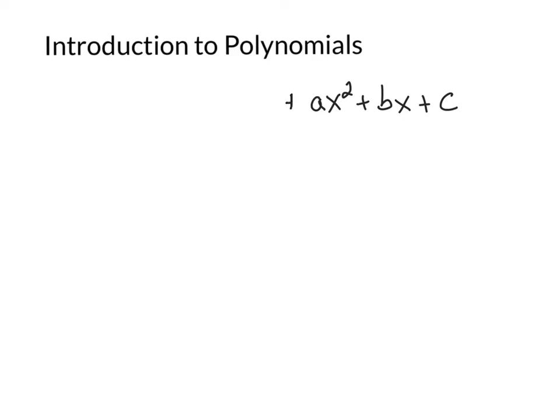With a general polynomial, I can actually add more terms. I could have an x cubed term, and I could have an x to the fourth term, and I could keep going. If I notice, I have numbers in front of my x squared and my x. If I wanted to keep going, I could put different letters in front of x to the fourth and x cubed, but eventually we're going to run out of letters — so we don't do that. Instead, we have a different way to write our coefficients.